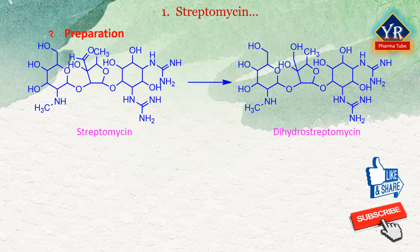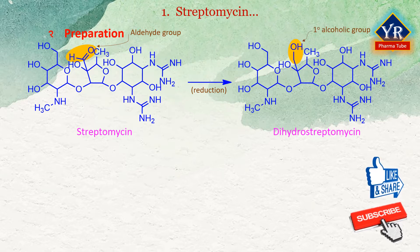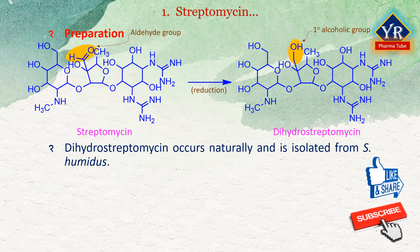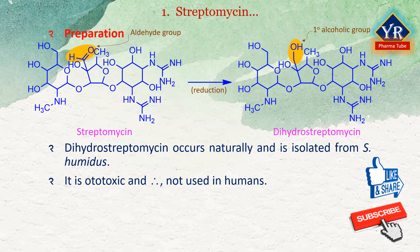Dihydrostreptomycin is a semi-synthetic antibiotic prepared by reduction of streptomycin. In this process, the aldehyde group of the streptose moiety is converted to a primary alcohol, i.e. CH2OH. Dihydrostreptomycin has also been found to occur naturally and has been isolated from the fermentation broth of Streptomyces humidus. Since dihydrostreptomycin is more ototoxic than streptomycin, it is no longer used in humans, although it is employed in veterinary practice.